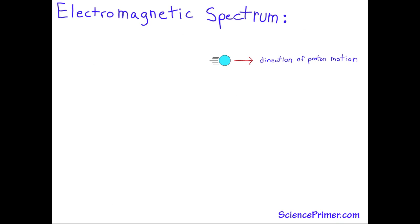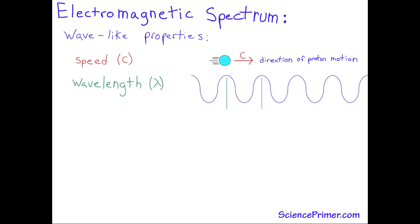As photons travel through space, they behave like waves. They have a speed, c, in the direction they are traveling. They have a wavelength, lambda, which is the distance between equivalent points on neighboring waves.